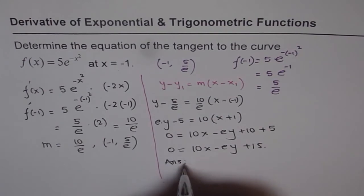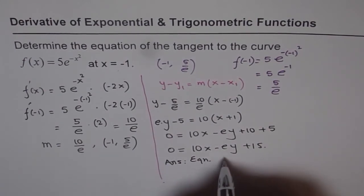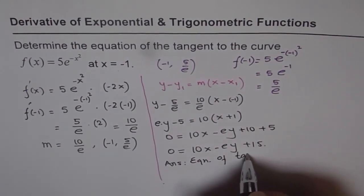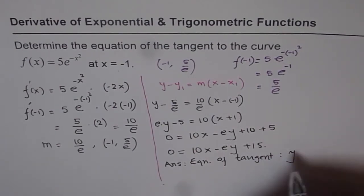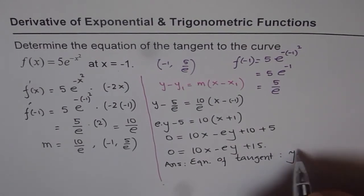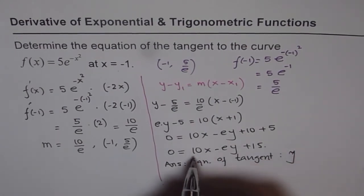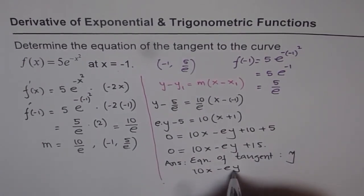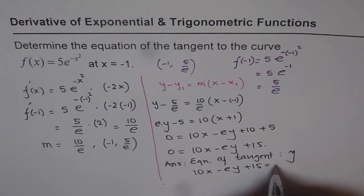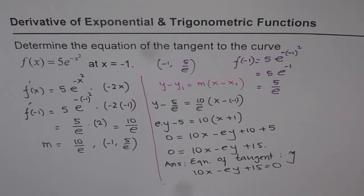So our answer is: the equation of the tangent is, in standard form, 10x - ey + 15 = 0. So we have written the answer in standard form, and that is the equation of our tangent line.